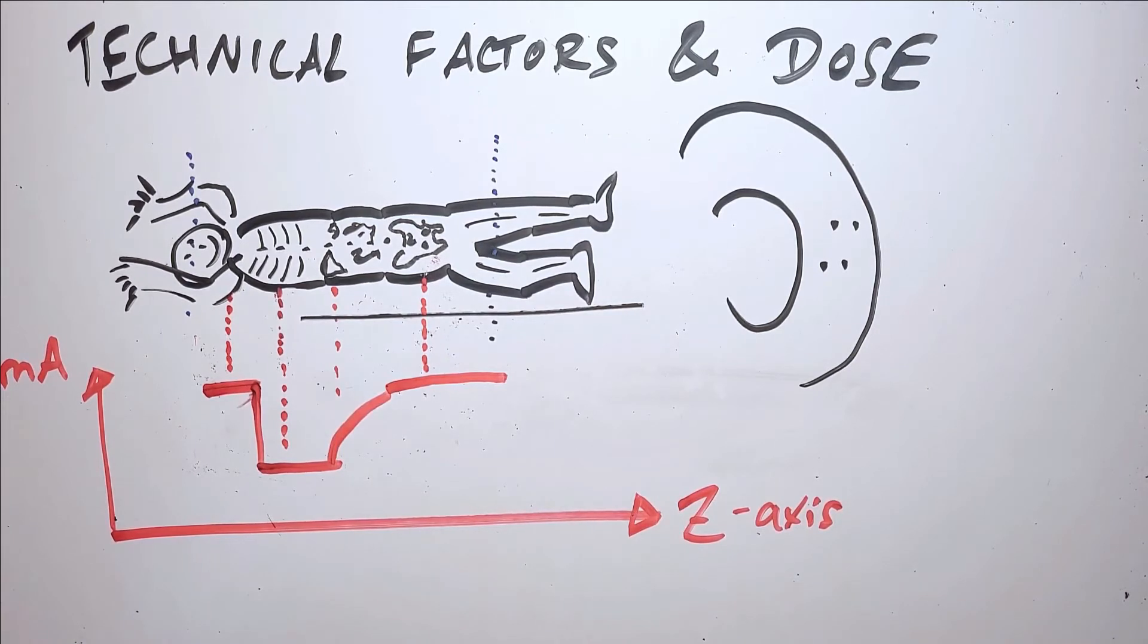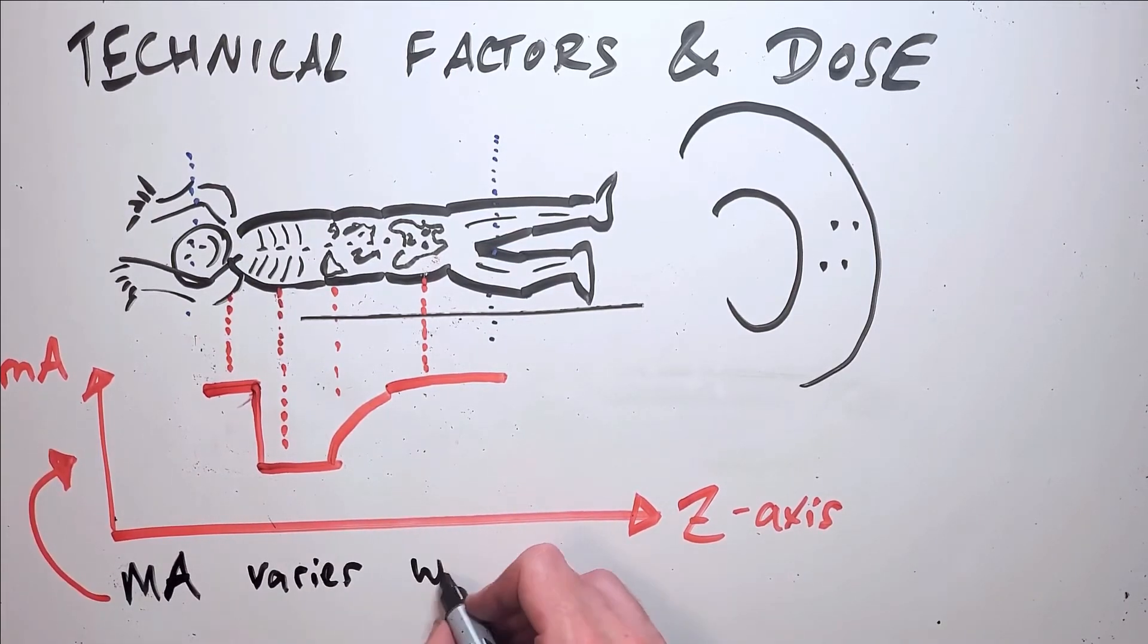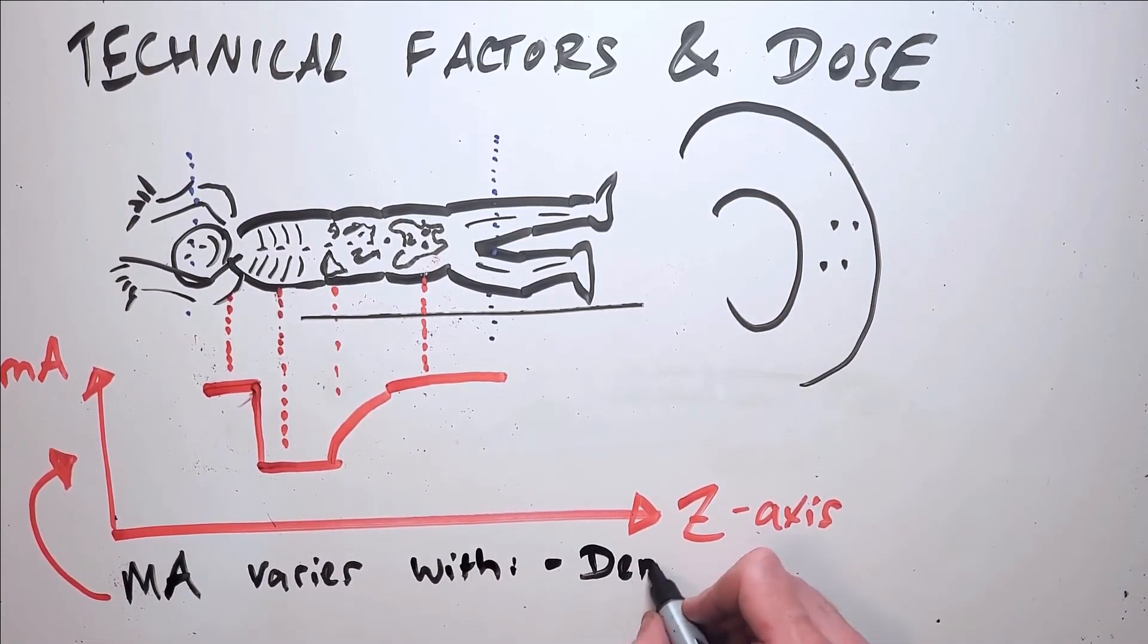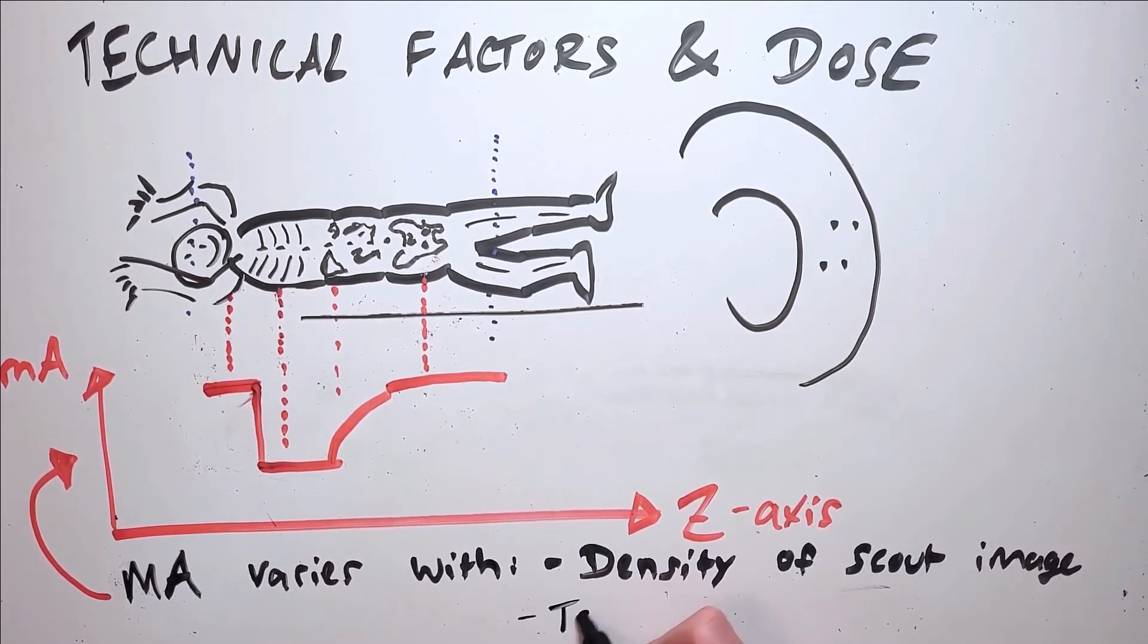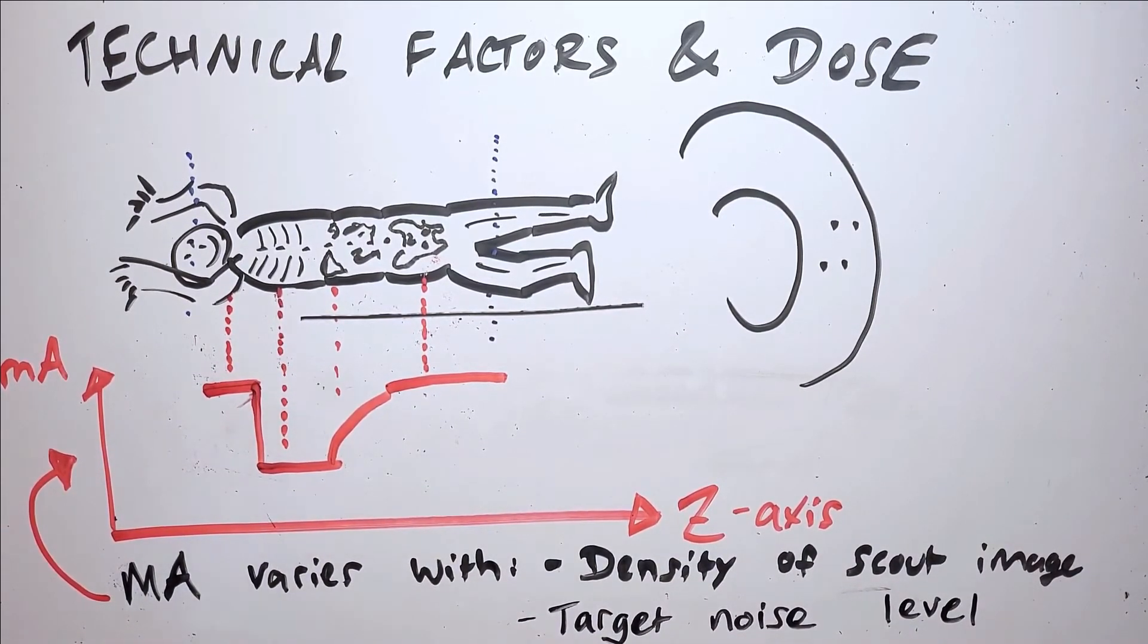This technique isn't used for all body areas but will almost always be used for scans through the trunk where dose requirements can vary significantly throughout the scan. When using this technique, a technologist will generally be able to set a certain level of desired image quality, often based on the standard deviation or the amount of acceptable noise in the image, and then the scanner will calculate the mA to aim for that target noise level.